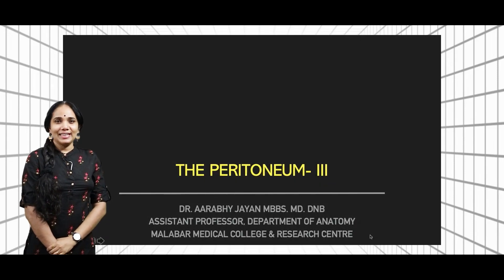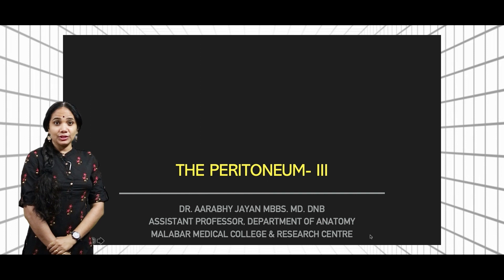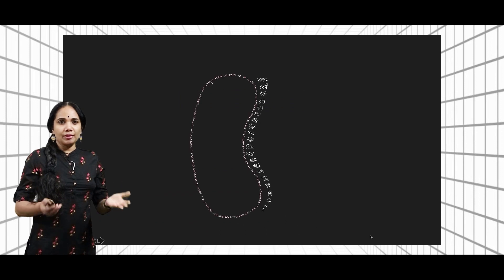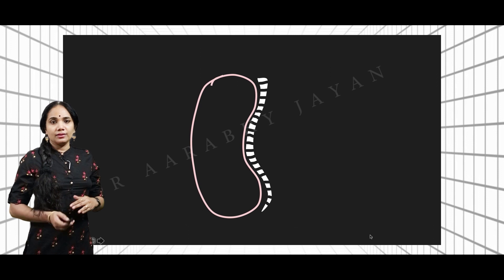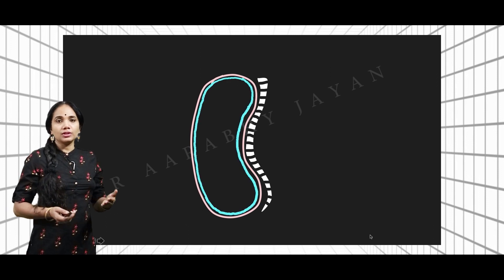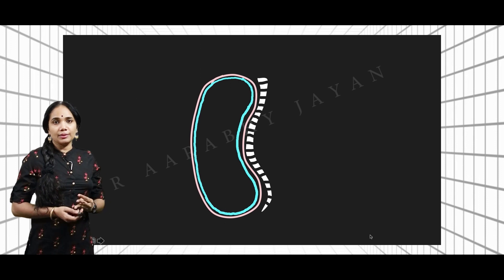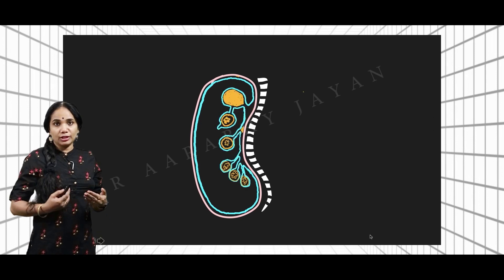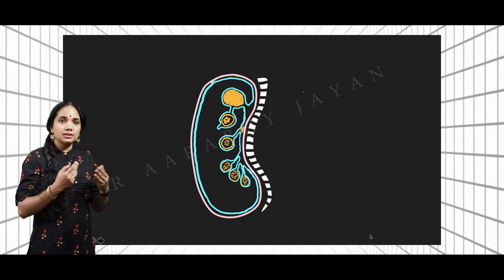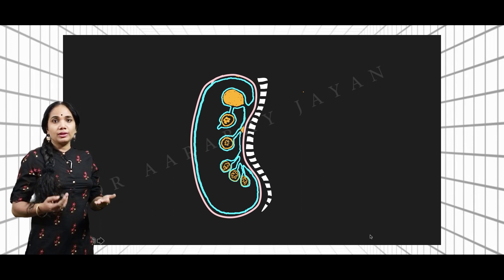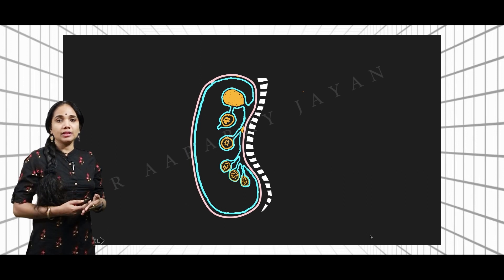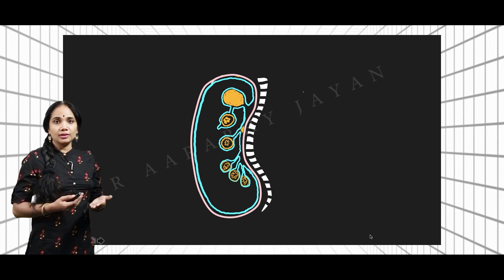Hello everybody. Today let us talk about the mesentery, which is part of peritoneum. We have already seen that the abdomen can be represented in a longitudinal section. Once we draw the layers of the peritoneum, we know that the peritoneum coats the inner cavity of the abdomen all around, and the organs progressively grow into this peritoneum dragging it with them. Some peritoneum ends up covering the organs while some remains attached to the abdominal wall, and the intervening part suspending these organs from the posterior abdominal wall is the mesentery.